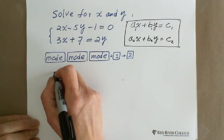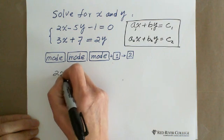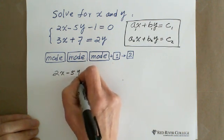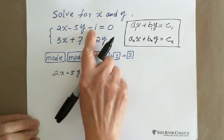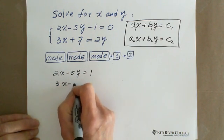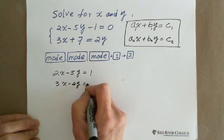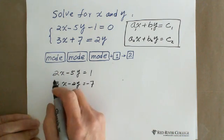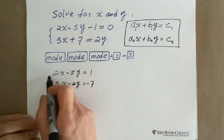So we change to 2x minus 5y equals positive 1, and 3x minus 2y equals negative 7. This is the standard form.